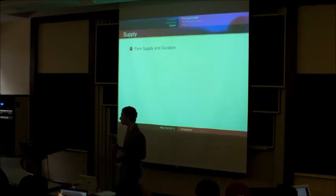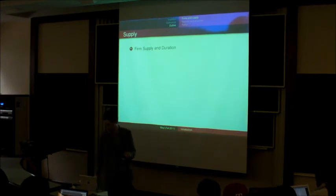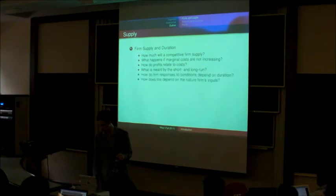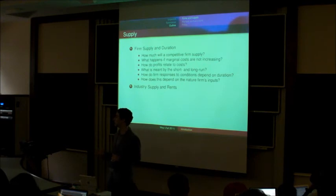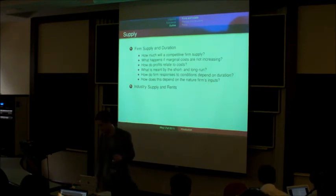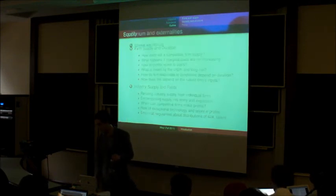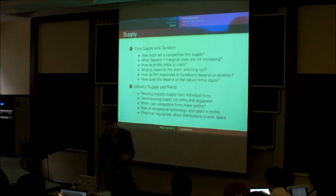How much do companies supply to the market? And how does this depend on the length of time that they expect to be supplying that amount for? And we'll talk about the long run and the short run and so forth. What companies make what profits? And how does that depend on the different companies and the total amount supplied to the market? And how does that relate to individual amounts that the individual companies are supplying? As well as what are empirical regularities about the size of different companies?